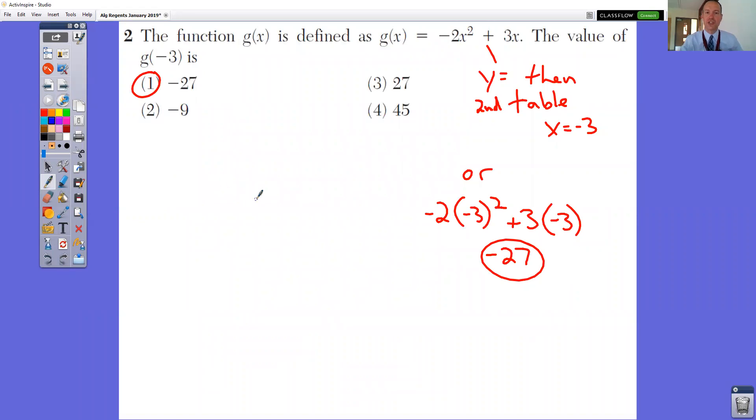In question number two, the function g of x is defined as negative 2x squared plus 3x. We want to know what the value of g of negative 3 is. So you could just take that negative 3 and sub it in for x and get negative 27. Or the easiest way to actually do this is to type in the equation. Remember, g of x just stands for y equals.